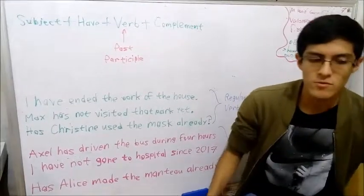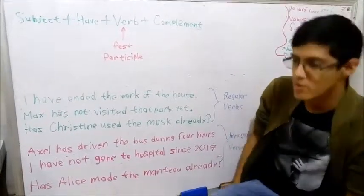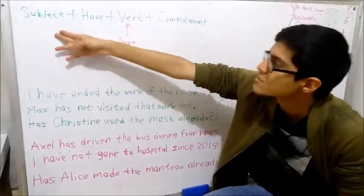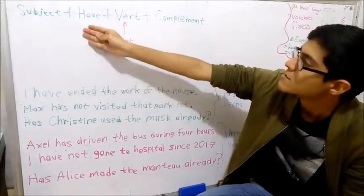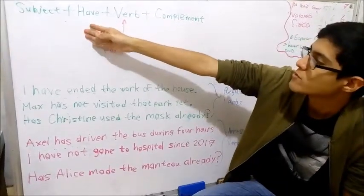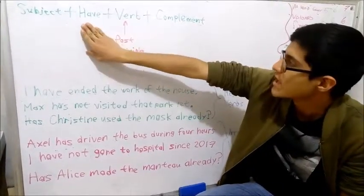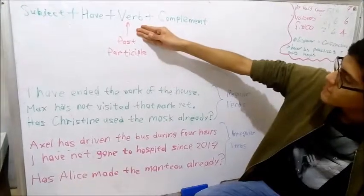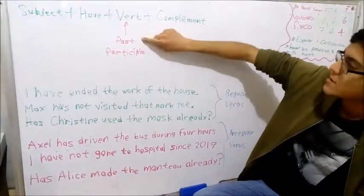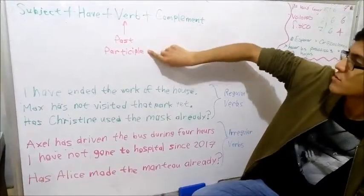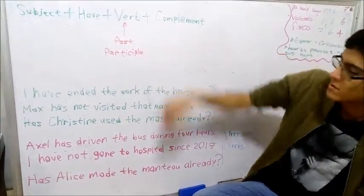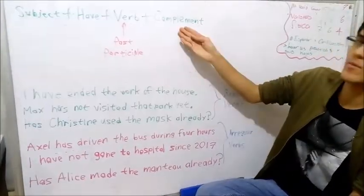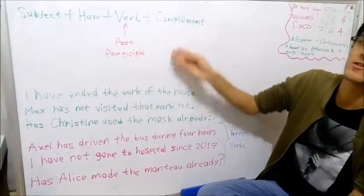The structure of the present perfect is the following. First, we have the subject. In the second part, we need to put have or has. After that, it is the verb in the past participle form. And after that, it is the complement of the sentence.